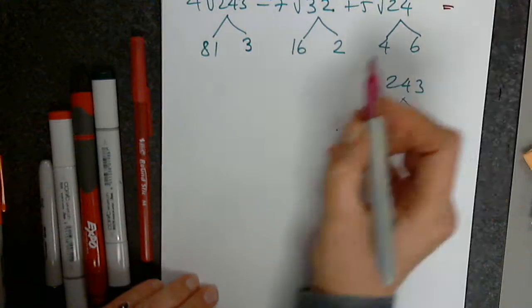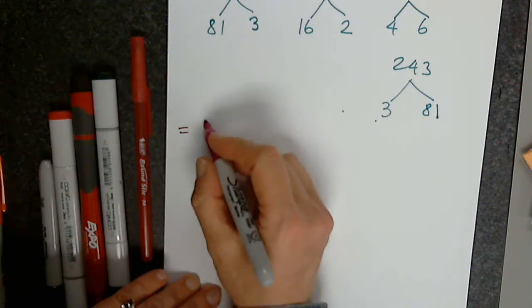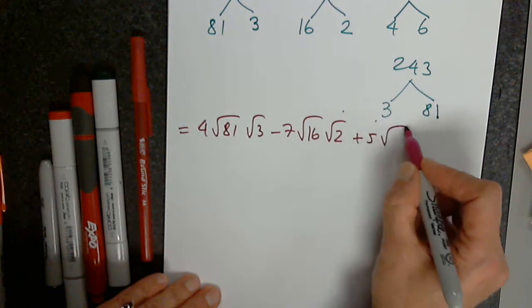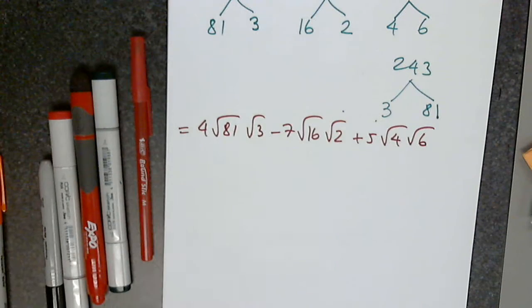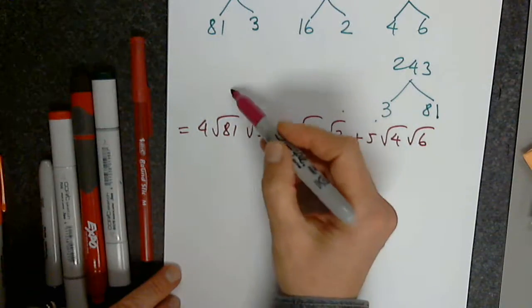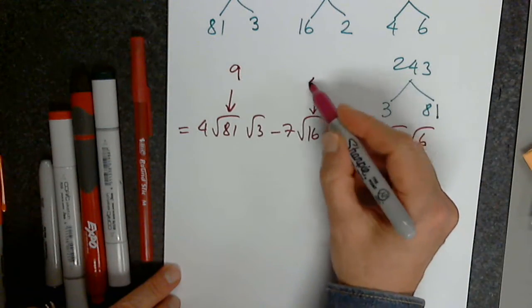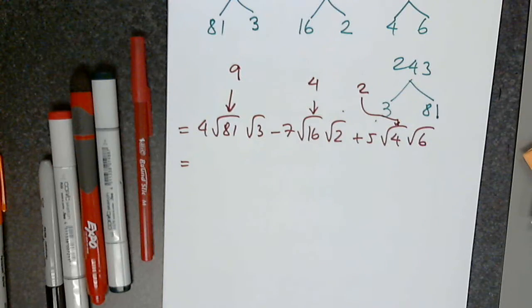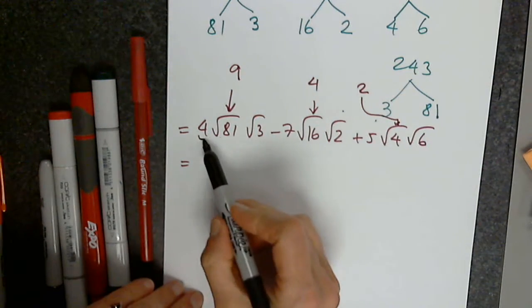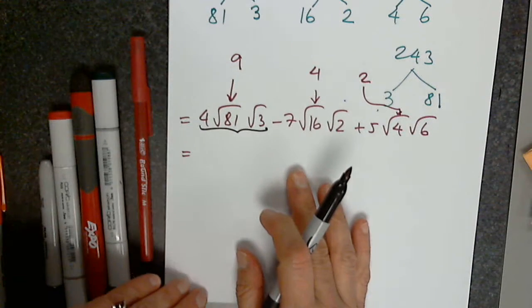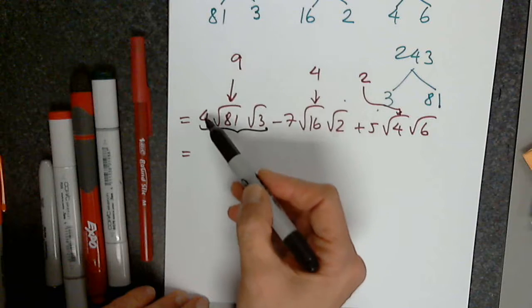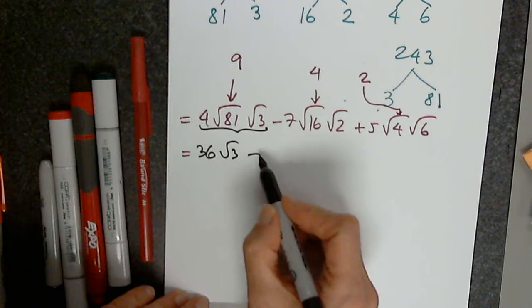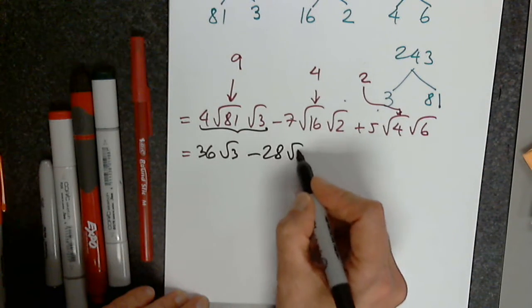So I can rewrite as 4 times the square root of 81 times the square root of 3, minus 7 times the square root of 16 times the square root of 2, plus 5 times the square root of 4 times the square root of 6. The square root of 81 is 9, the square root of 16 is 4, the square root of 4 is 2. So the simplified form of the first term is 36 times the square root of 3, and continuing: minus, minus.